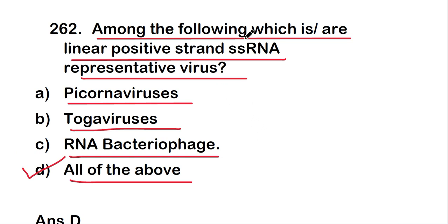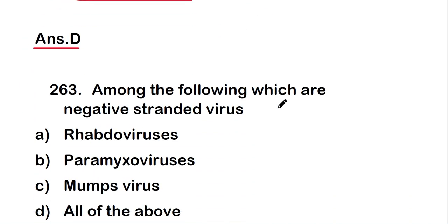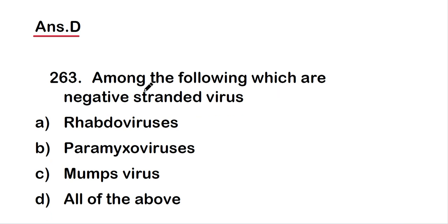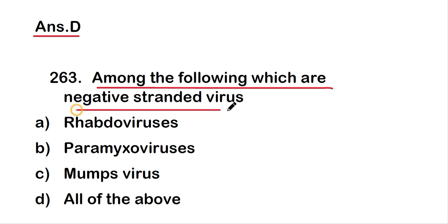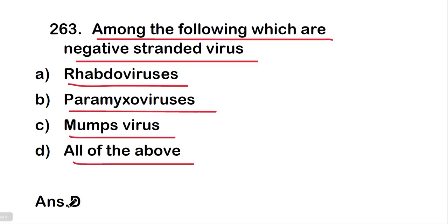The next question: among the following, which is or are negative strand single-stranded RNA representative virus? The options are rhabdoviruses, paramyxoviruses, mumps virus, or all of the above. The right answer is option D — all of these viruses are negative-stranded viruses.